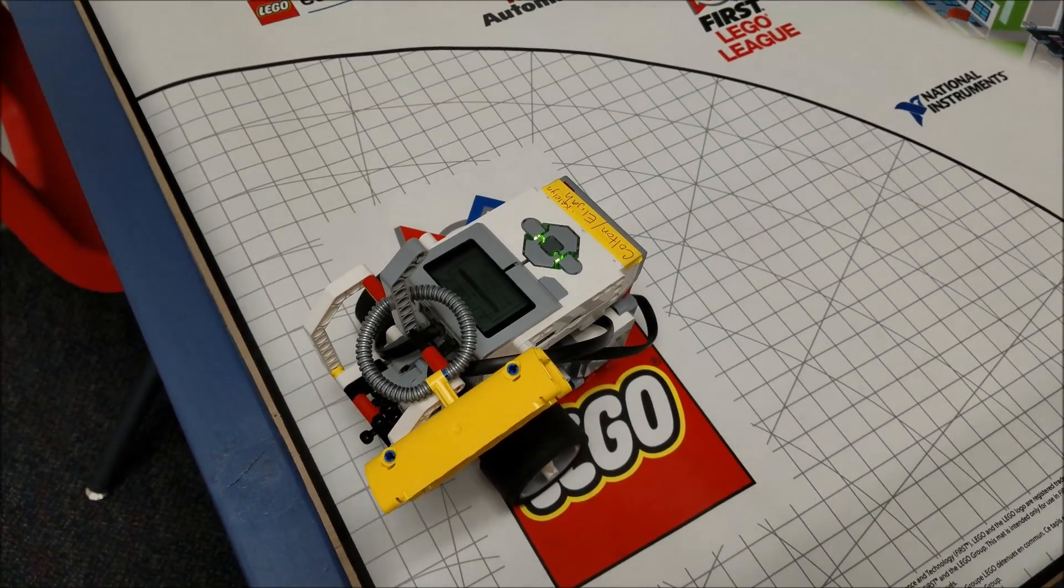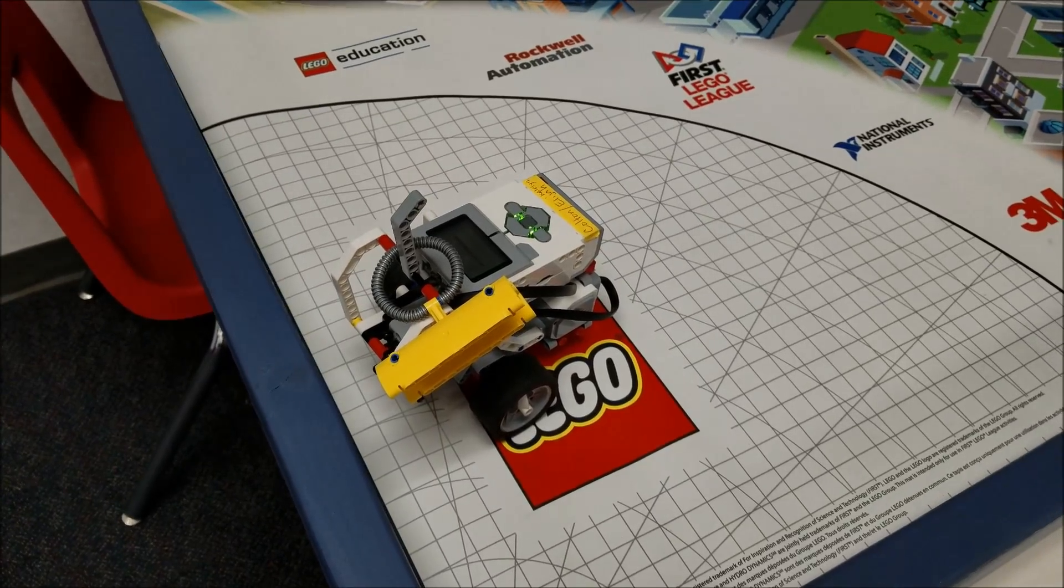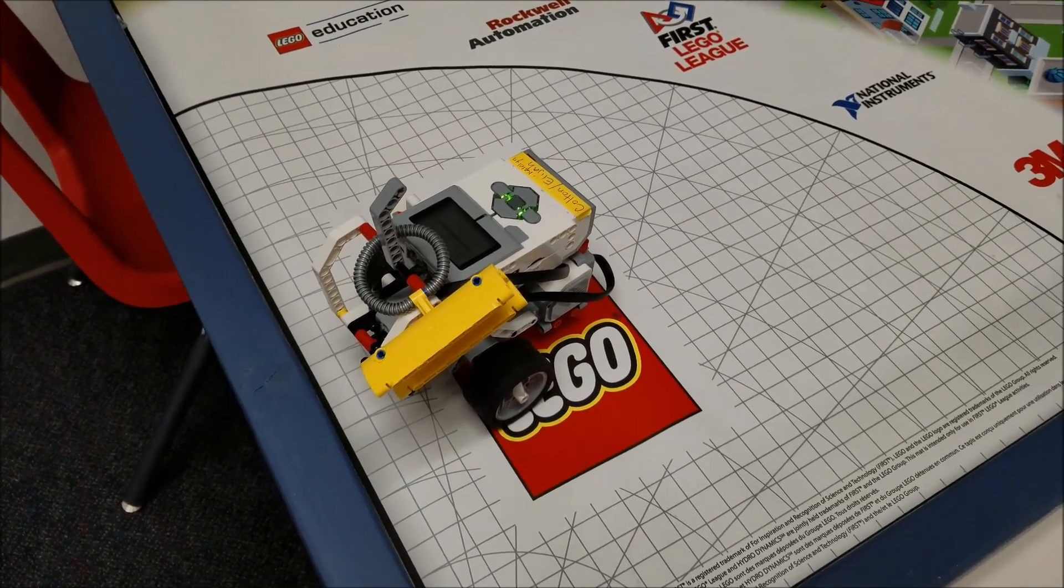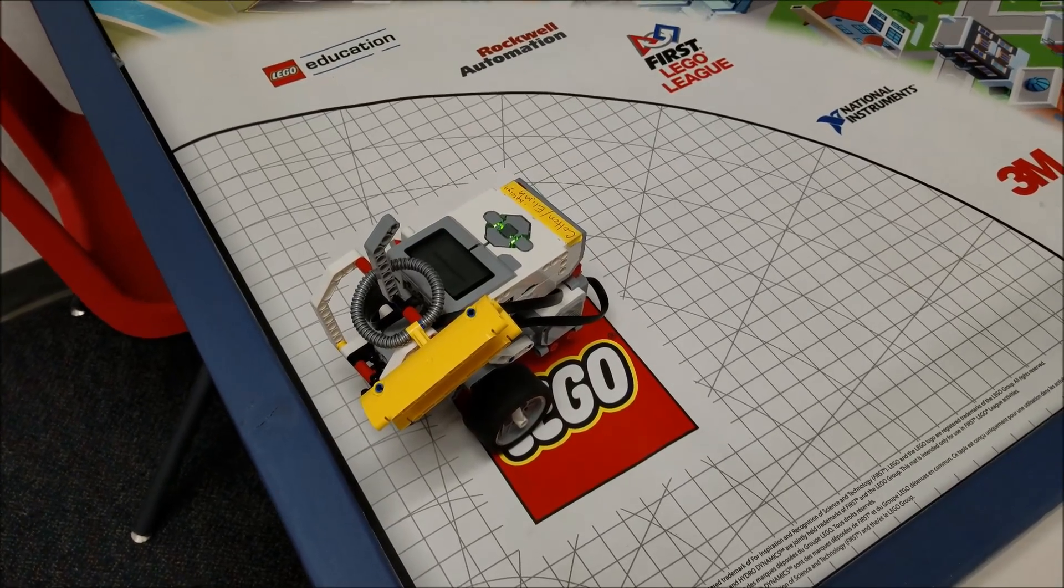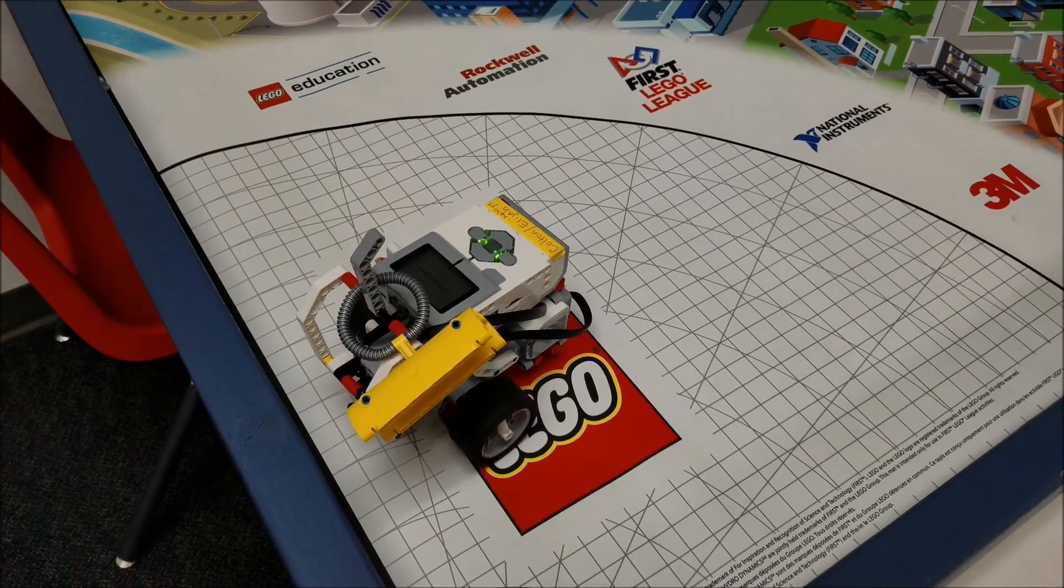So I know that in your FLL matches you're not going to want your robot to go that slow, but I just wanted you to see how again you can have a simple robot like this complete missions with the right attachments. You don't need something incredibly complicated.